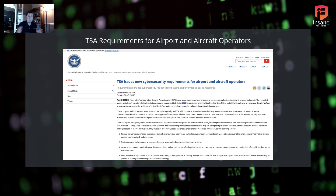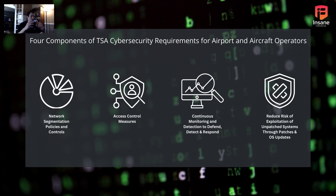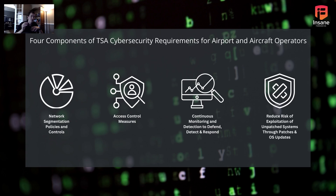There are four parts to this standard. The first is network segmentation policies and controls — how you segment your network. Airports play a lot of functions: baggage, airport Wi-Fi, ground ops, the tower, air traffic control, and more. Within an airport there's a ton of functions that can be segmented, and TSA mandated network segmentation policies and controls on how you both monitor and maintain that segmentation.